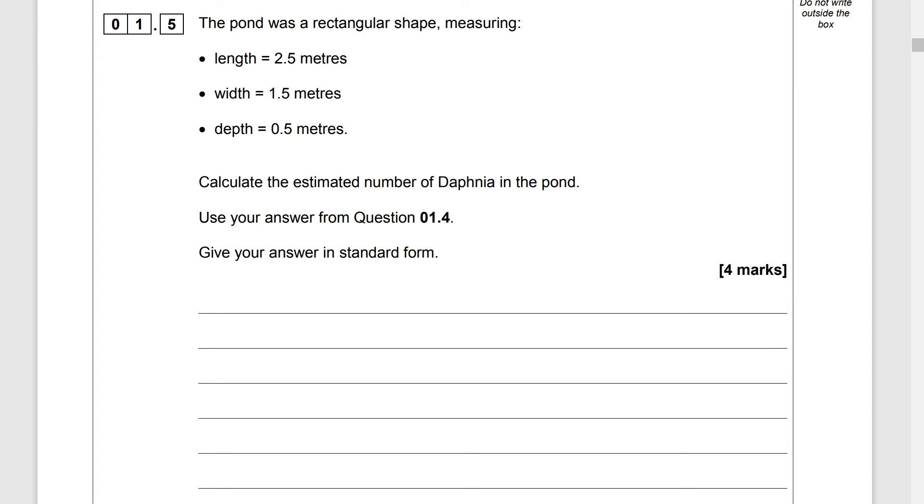The pond was a rectangular shape measuring with a length of 2.5 metres with a width of 1.5 metres and a depth of 0.5 metres. Calculate the estimated number of Daphnia in the pond. Use your answer from question 1.4. Okay give your answer in standard form. Don't forget that bit.